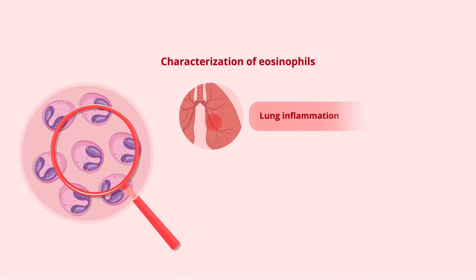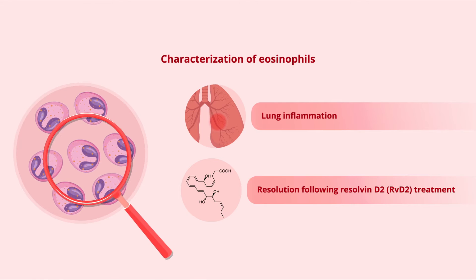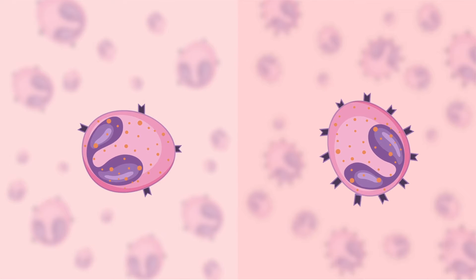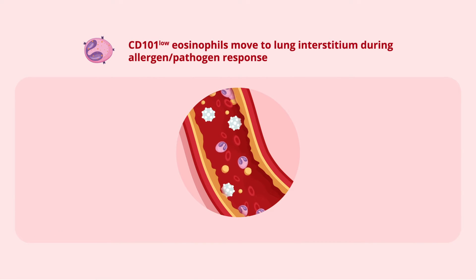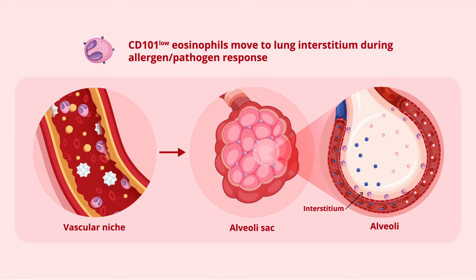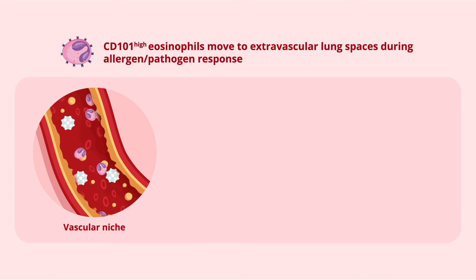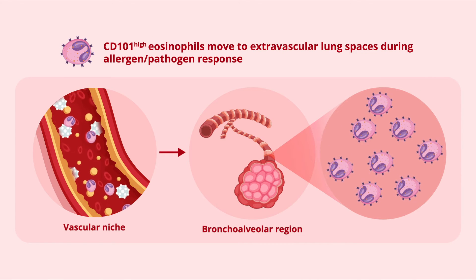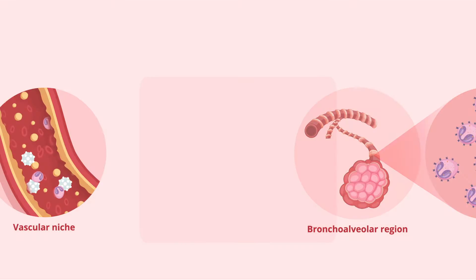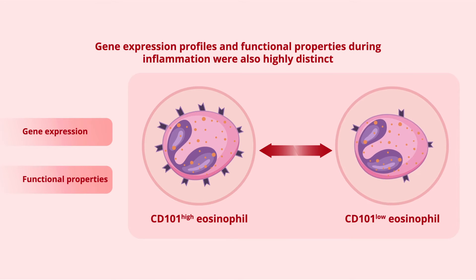Eosinophils were characterized during inflammation, resolution, and following Resolvin D2 or RVD2 treatment. Eosinophils were classified into two groups defined by their CD101 expression. The CD101 low eosinophils moved from the vascular niche to the lung interstitium in response to an allergen challenge. In contrast, the CD101 high eosinophils were primarily located in the extravascular lung spaces such as the bronchoalveolar region and were only present during inflammation. The gene expression profiles and functional properties between CD101 high and CD101 low eosinophils during inflammation were also highly distinct.